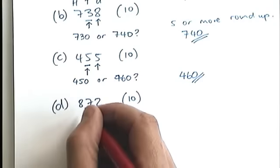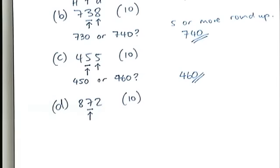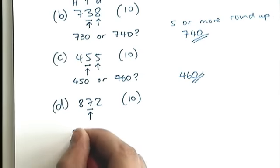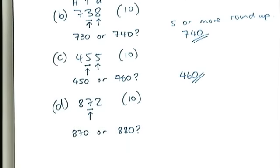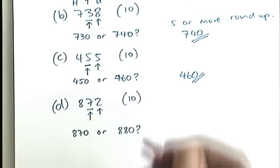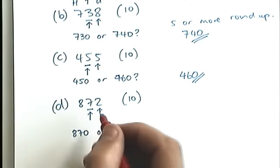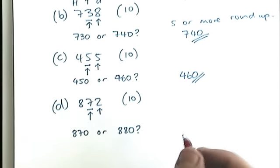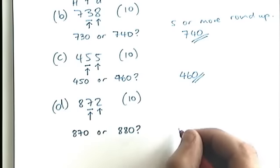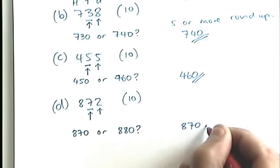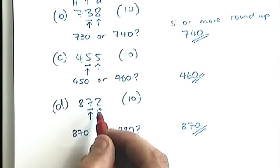And on this last one, again rounding to the nearest tens, so I look in the tens column. I say to myself, is it 870 or is it 880? And then I look in the next column. If it's a five or more, I round up. But because it's not a five or more, I'm going to round down to 870. So you only use the top number if the next digit is five or more.